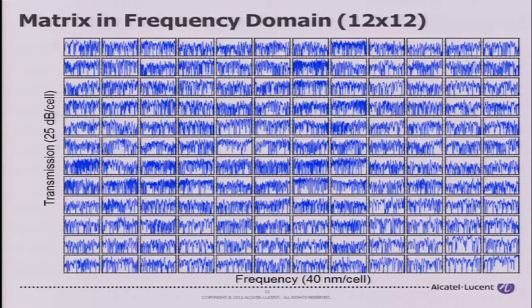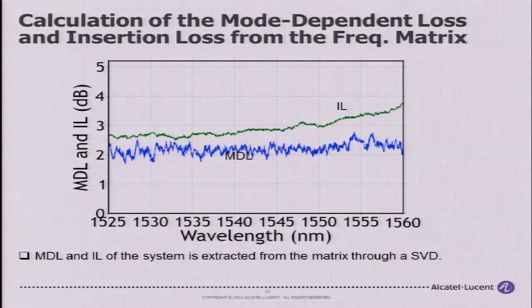What you really want to know is the mode-dependent loss and the insertion loss. By performing matrix eigenanalysis using the amplitude and phase data, you can clearly extract the mode-dependent loss performance and insertion loss performance of the device. For this multiplexer, we had about 2 dB mode-dependent loss for all six modes and a relatively low insertion loss.